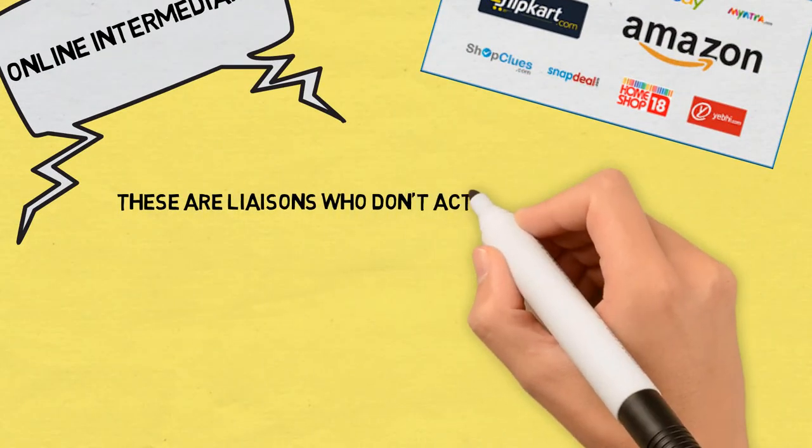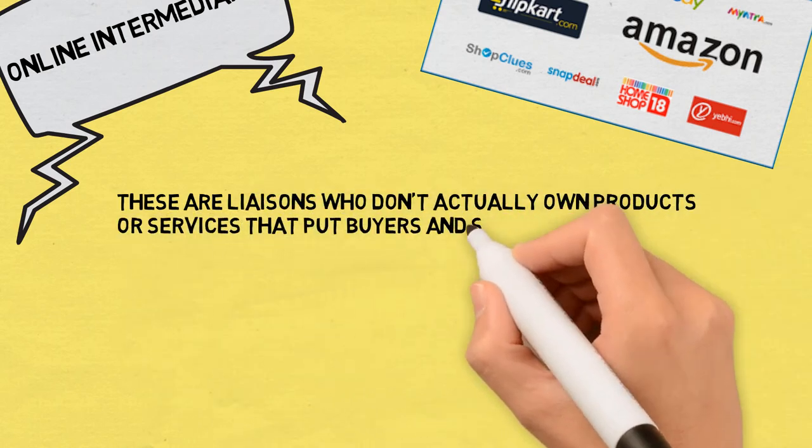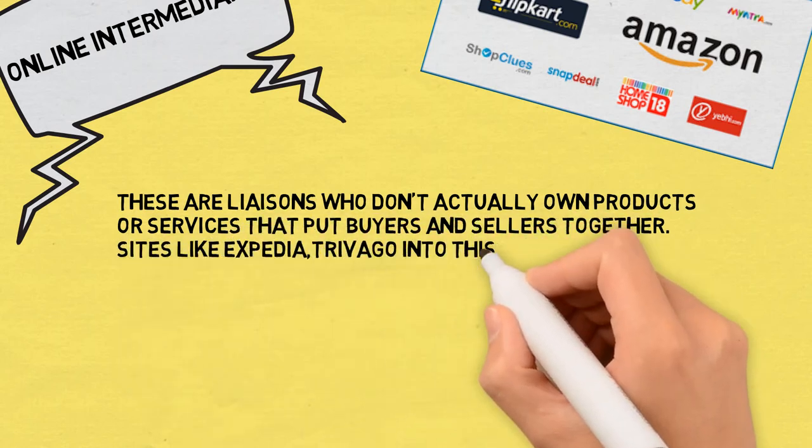These are intermediaries who don't actually own products or services but put buyers and sellers together. Sites like Expedia fall into this category.